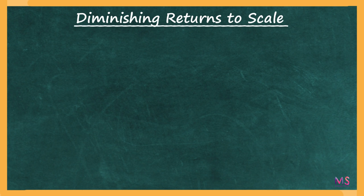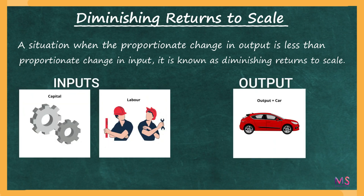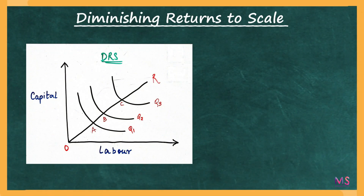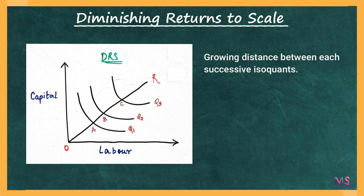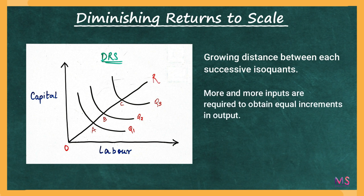A situation when the proportionate change in output is less than the proportionate change in inputs is known as Diminishing Returns to Scale. Suppose capital and labor are doubled but the production of car is less than doubled — that is less than 2X — then the returns to scale are termed as Diminishing Returns to Scale. Diagrammatically, this is portrayed by the growing distance between each successive isoquant, meaning the distance between Q1 and Q2 and then Q2 and Q3 increases. This means more and more inputs are required to obtain equal increments in output.